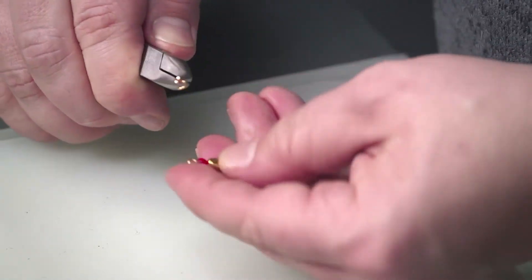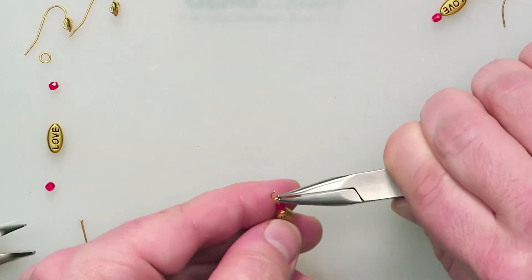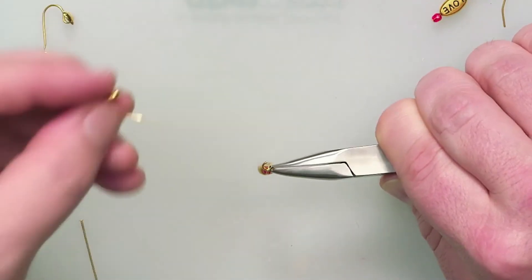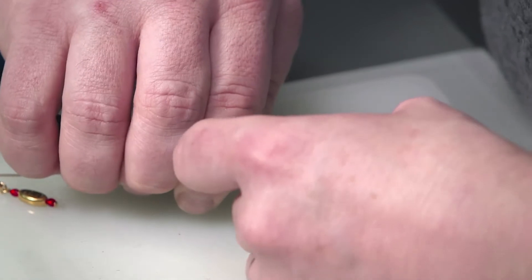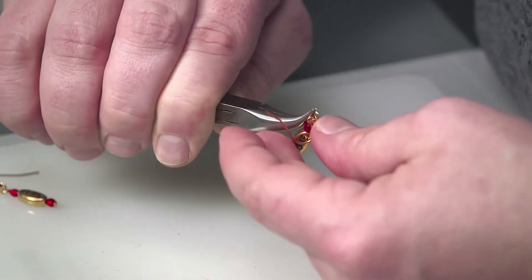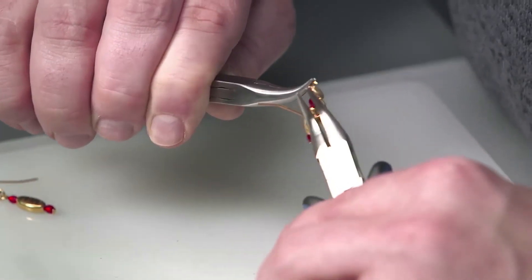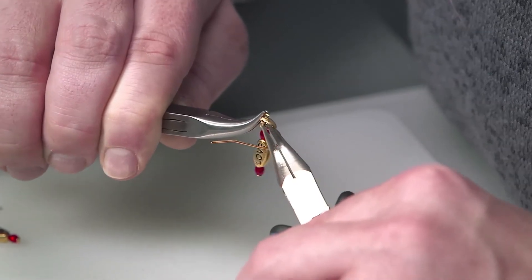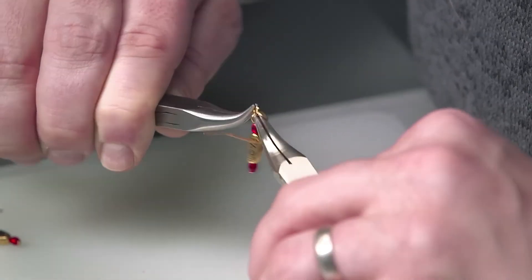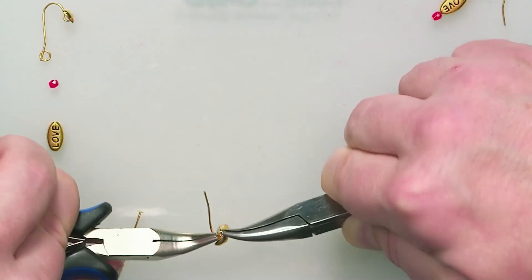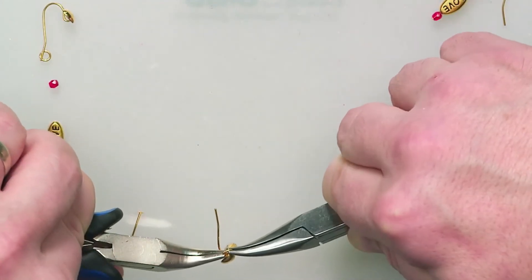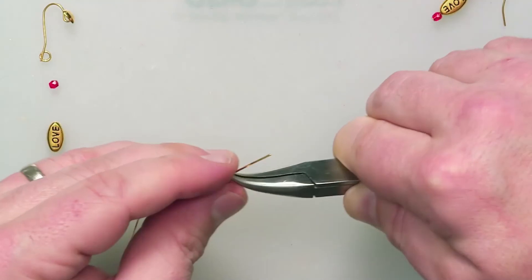We'll go ahead and add our love charm onto the end of that. And then just grab our ear wire and we'll just add that on there. And using my curved nose pliers, just going to reach in there, grab that jump ring, twist it close, make sure it gets in real nice tight closure. And there we go.